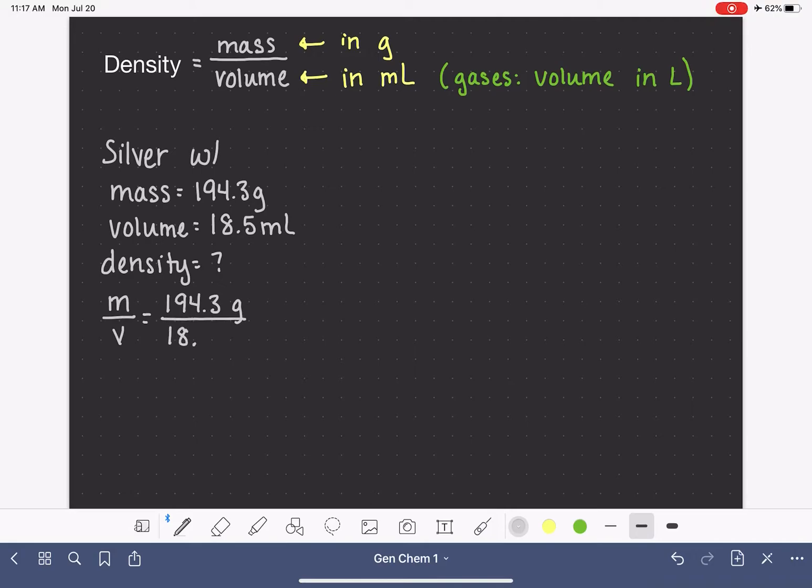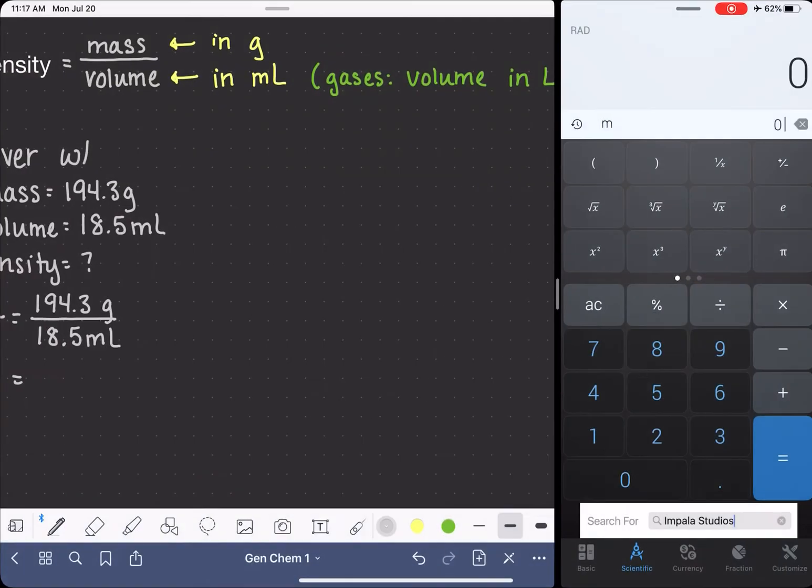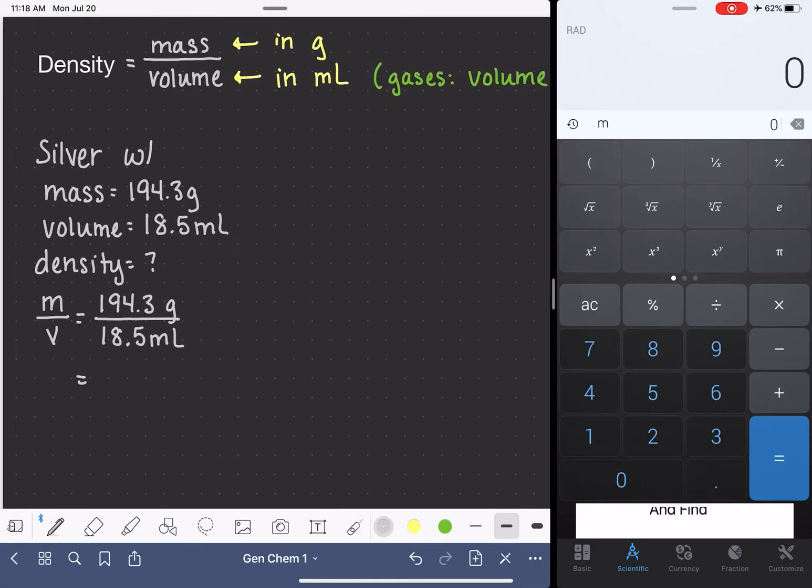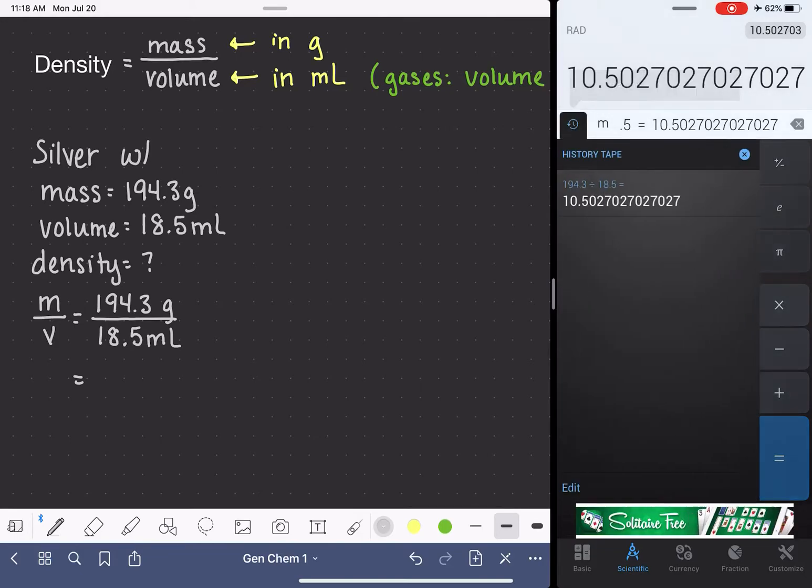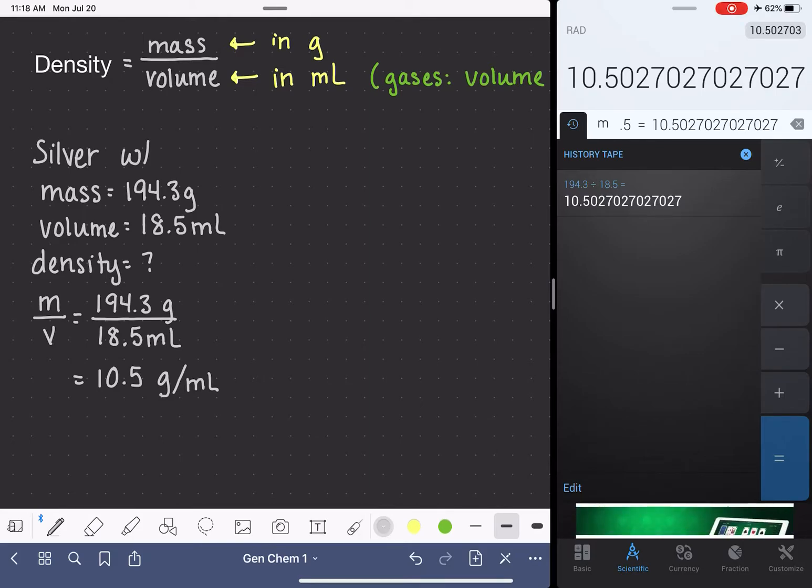Our volume is 18.5 milliliters. We just have to plug this into a calculator and work out the number 194.3 divided by 18.5. We get 10.5. The units of density are grams per milliliter. So we would pronounce that 10.5 grams per milliliter. That's a pretty straightforward calculation.